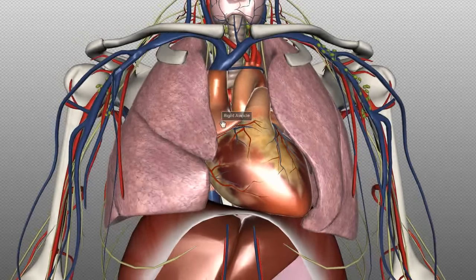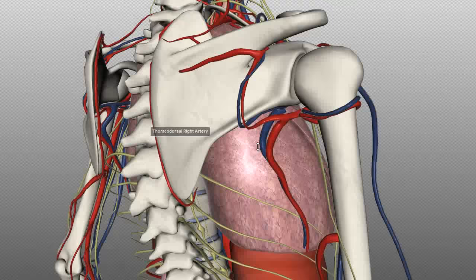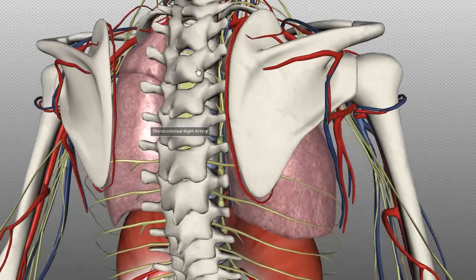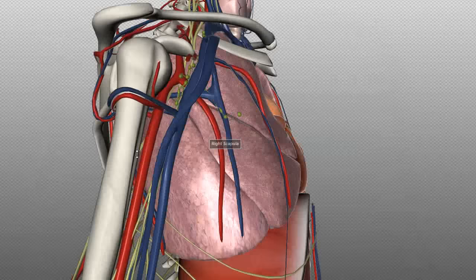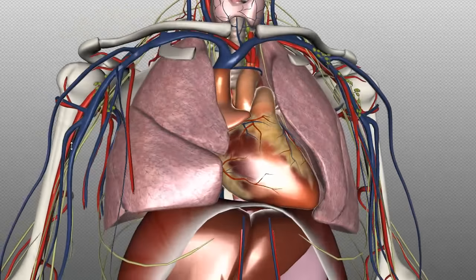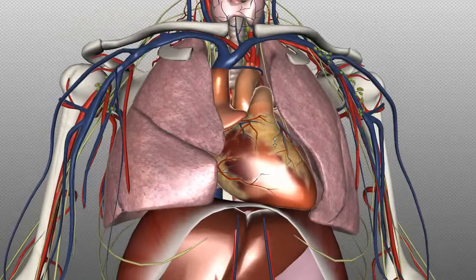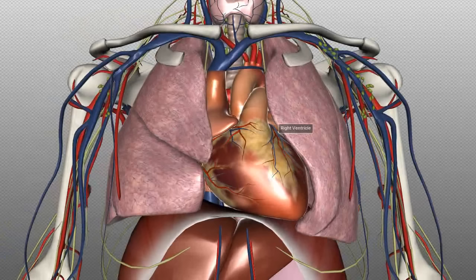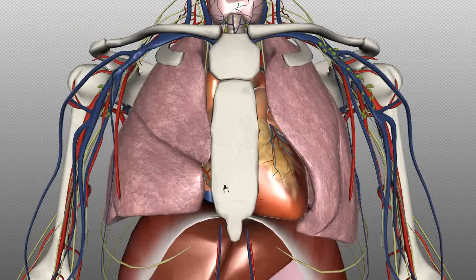The posterior border of the mediastinum is made up of the bodies of the thoracic vertebrae, which you can see here forming the posterior wall. Anteriorly, you have the manubrium and the sternum, which make up the anterior wall.